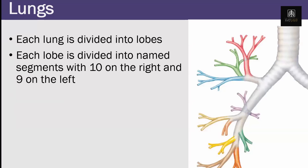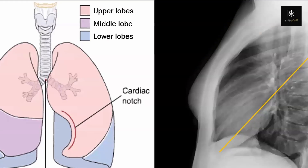Each lung is divided into lobes, and I ask my residents to also know each segment within the lobe — there are 10 on the right and 9 on the left.